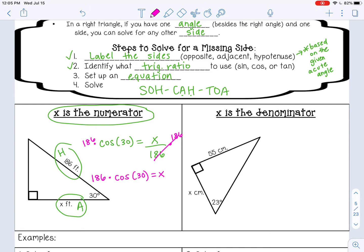In my calculator, I'm going to type 186 times cosine of 30. When you type that in, you should get 161.1 if you round to the tenths place. Then we do have a unit of measure here, so feet. That means this side of the triangle is 161.1 feet.